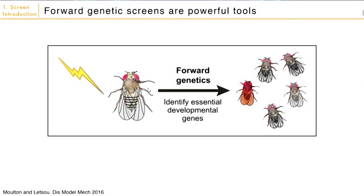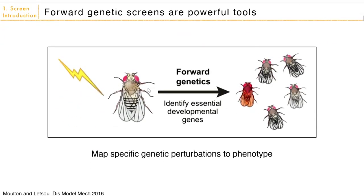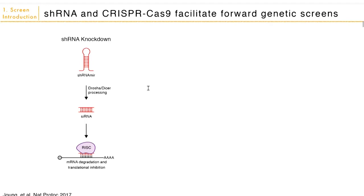Forward genetic screens are very powerful tools for studying any genes that lead to a particular phenotype of interest. Traditionally this was done with Drosophila — people would chemically mutagenize the flies, grow them up, pick out the ones with interesting phenotypes, and then figure out which genetic perturbations led to that phenotype. The problem with Drosophila screens is that going back to figure out which perturbations led to the phenotype of interest was very difficult to do.